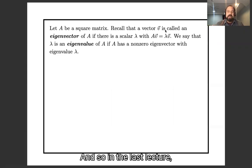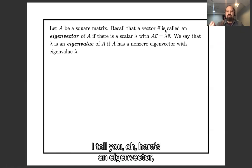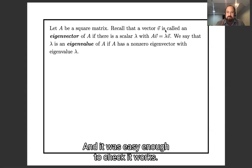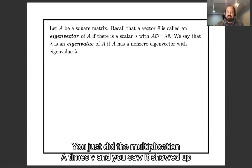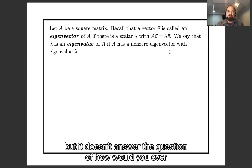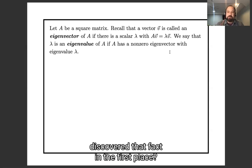And so in the last lecture, I just had a bunch of matrices that I tell you, oh, here's an eigenvector, here's an eigenvalue, look, it works. And it was easy enough to check it works, you just did the multiplication A times v, and you saw it sure enough, you got lambda times v.